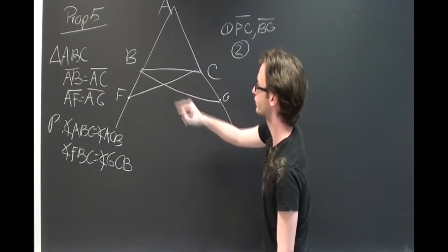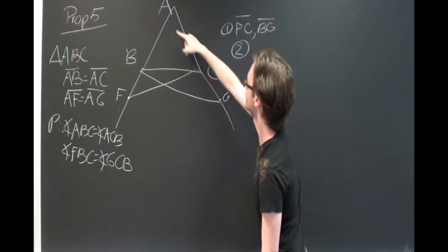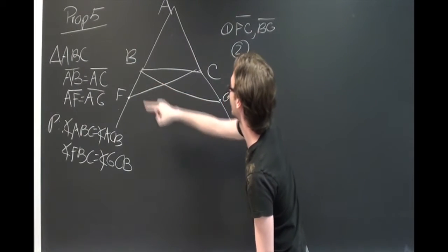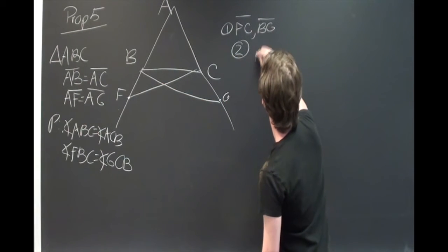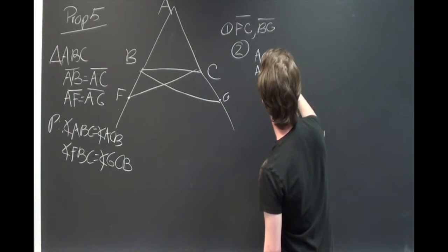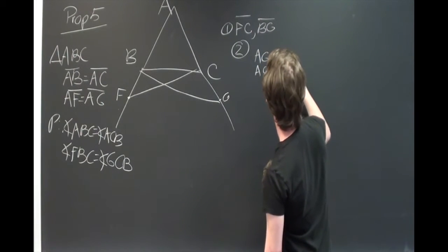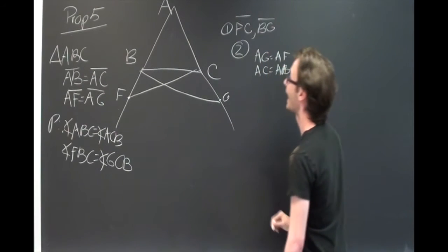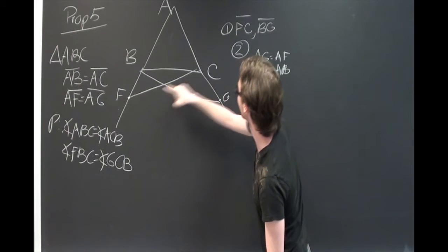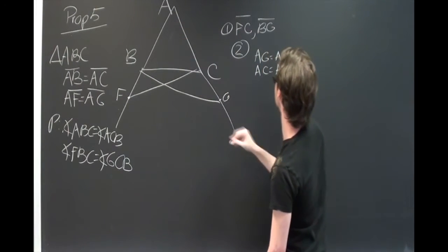Now, we know from the construction that AC is equal to AB, and that AG is equal to AF. And that these two triangles, BGA and AFC, share a common angle BAC.